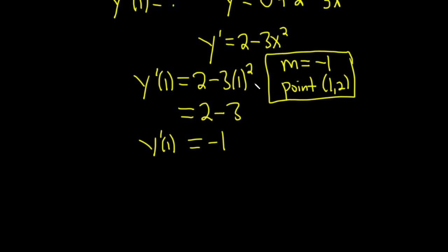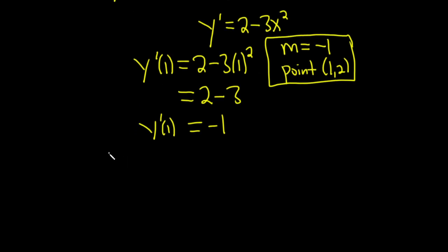All right, so now we're going to use a formula. There's a couple formulas we can use. I like to use this one. It's the point slope formula: y minus y1 is equal to m parentheses x minus x1.